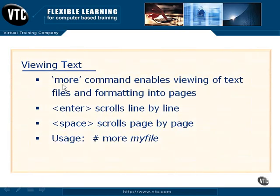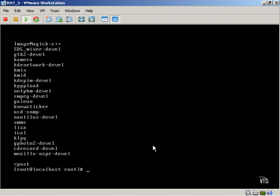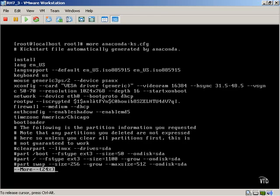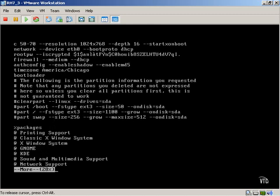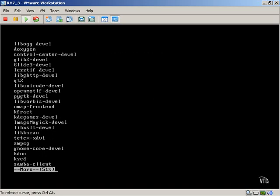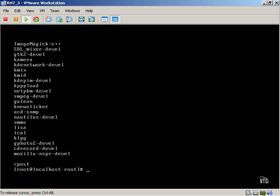We can also look at the more command. The more command contains better navigation features — the biggest feature is that it allows you to format the text file into individual pages. You can use the enter key to scroll line by line, or you can use the space key to move down one page at a time. The usage is also very simple: you simply type in more and the name of the file. Using our same Anaconda configuration file, we say more and the file name. If I press enter I move down one line at a time, and if I use the space bar key it allows me to jump down a page, all the way to the bottom of the file, and then it exits.